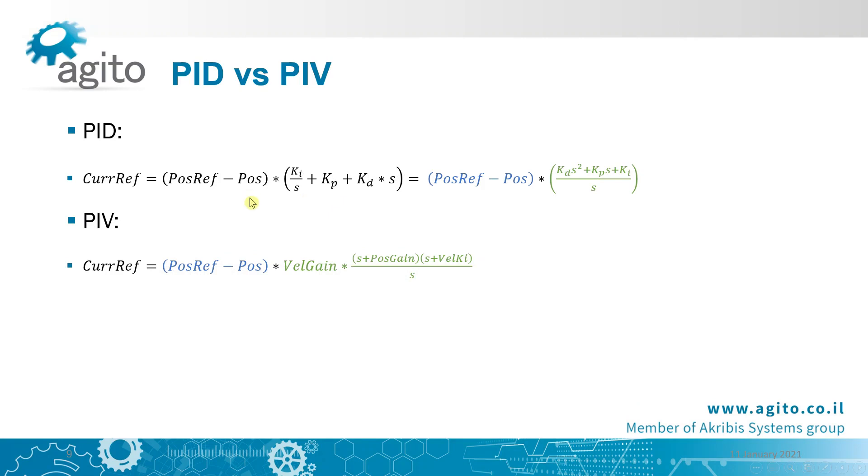We see that the PIV parameters are just two zeros, an integral, and a gain. That's why it's much easier to tune this controller in the frequency domain, as opposed to PID.